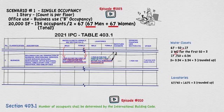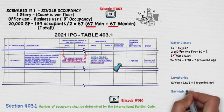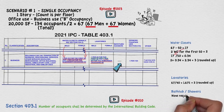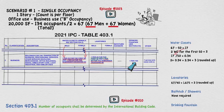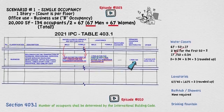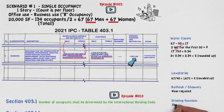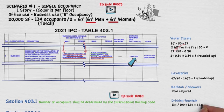The next column is for bathtubs and showers, but there are no requirements, so none are required per the plumbing code. The next column is for drinking fountain requirements, which states 1 per 100. Note that this is no longer divided by male and female, so we use the total number of 134 divided by 100, which equals 1.34. We round up, so 2 drinking fountains are required.